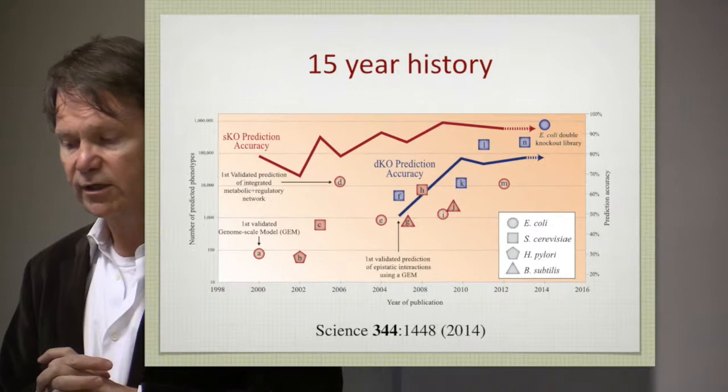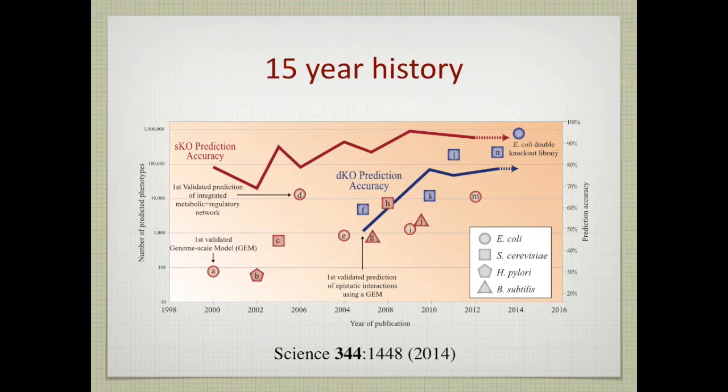And this little perspective here in science summarizes all of these results. So on the y-axis to the left is the number of phenotypes being looked at. And the top number there is 100,000. There's a log scale, 10,000, and so forth. So the E. coli experiment that Marcus Covert analyzed was about 13,000 endpoints being predicted, just to give you a feeling for that scale.